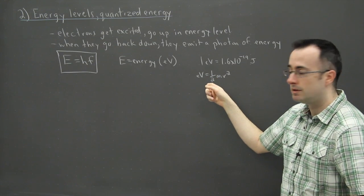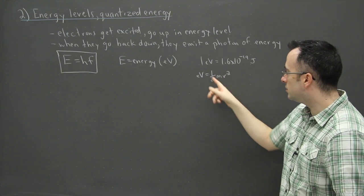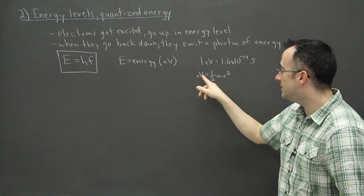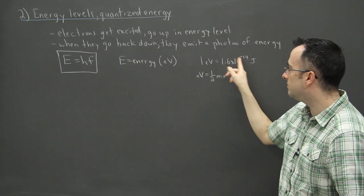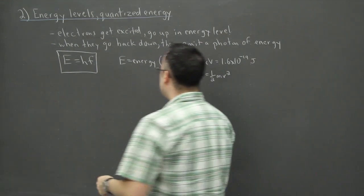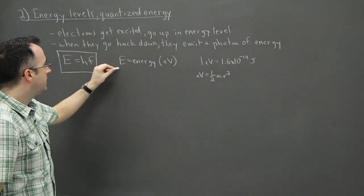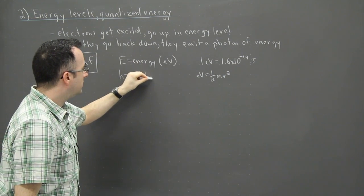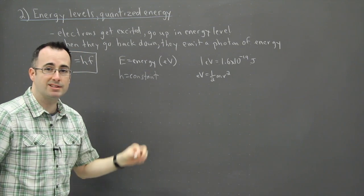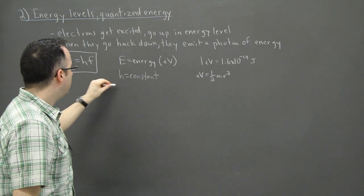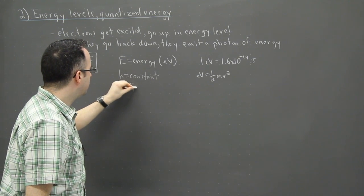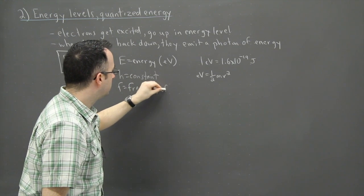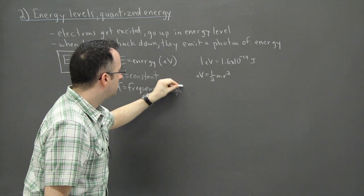This tells you about kinetic energy. Notice half mv squared—that's a unit of energy, so is EV. That's why we use 1 eV. So E is the energy in electron volts, H is just a constant you can look up in your data booklet, and F is the frequency of light measured in Hertz or 1 over seconds.